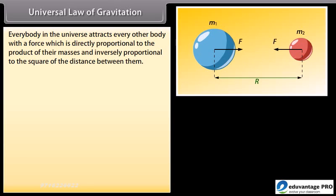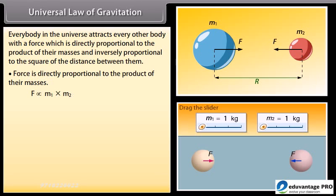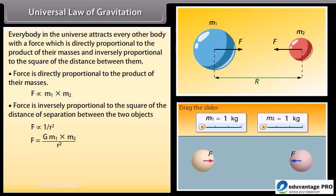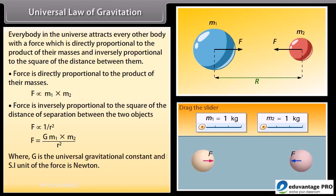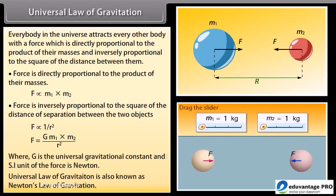Universal Law of Gravitation: Every body in the universe attracts every other body with a force which is directly proportional to the product of their masses and inversely proportional to the square of the distance between them. Here, G is the universal gravitational constant and the SI unit is Newton. This law is also known as Newton's law of gravitation.